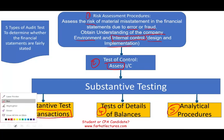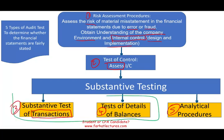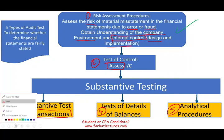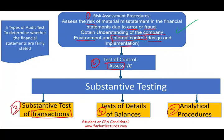Some textbooks would consider test of transactions and test of details separate from analytical procedures — that's fine. But I like to keep analytical procedures under substantive testing. Those are the five things: risk assessment, test of control, substantive test of transactions, test of detailed balances, and analytical procedures. These are covered heavily in every audit cycle.